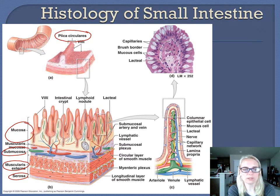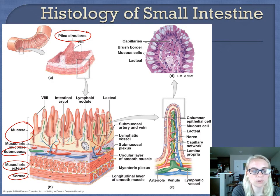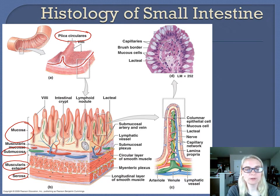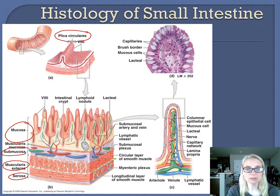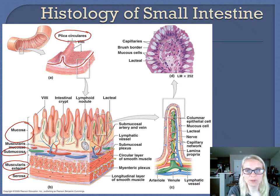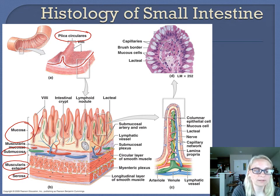The first modification is the plica circularis, sometimes known as circular folds. These are permanent folds of the mucosa — they don't disappear like the rugae in the stomach. The rugae help the stomach stretch and fold in when empty, but the plica circularis are permanent folds that make the inner lining of the small intestine look wrinkly. On the surface of those plica circularis are the villi.